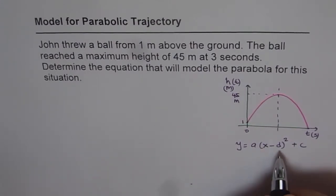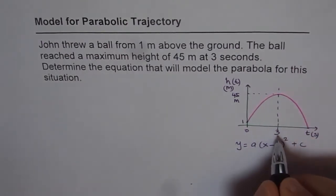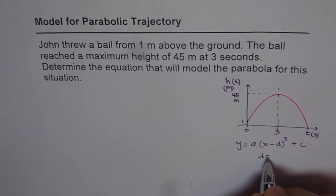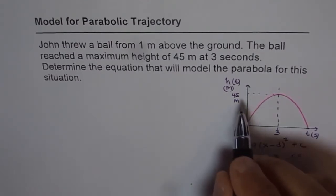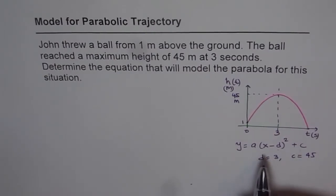Now in this equation we are given d and c. As you can see d is 3. At 3 we have a maximum height of 45. So d equals 3 and c is the maximum height of 45. So we are given these values. We will use these values and then find out our equation. So that is our thinking and strategy at the moment.